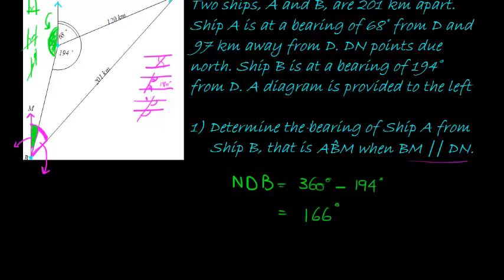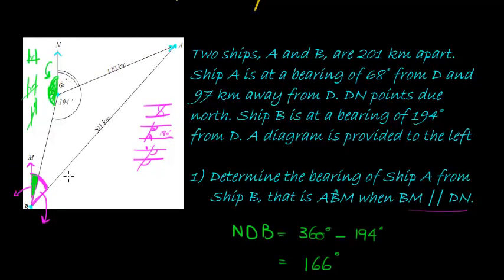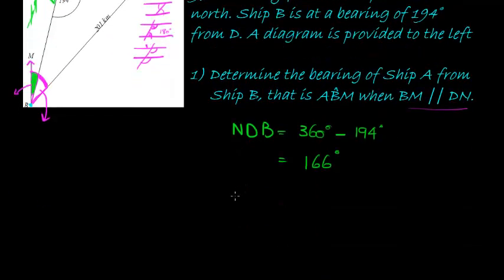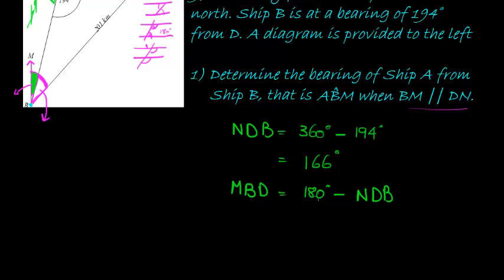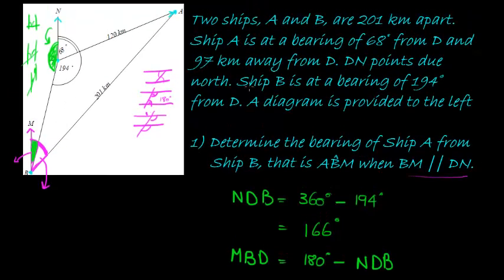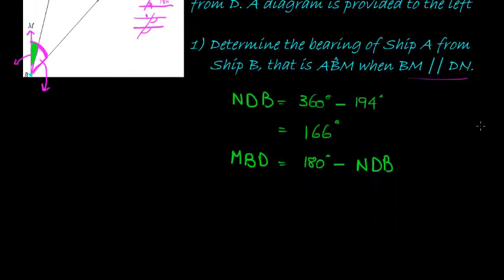So NDB is 166 degrees. And MBD must equal 180 degrees minus NDB, because NDB plus MBD should be 180 — those are the supplementary angles. Which means it's 180 degrees minus 166 degrees, so that takes me to 14 degrees.